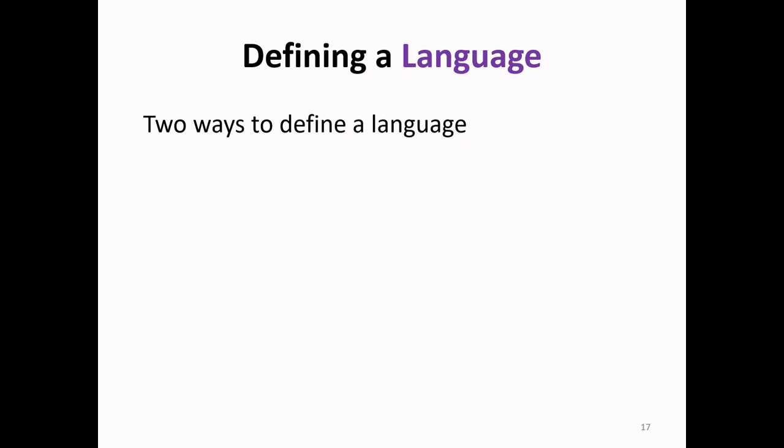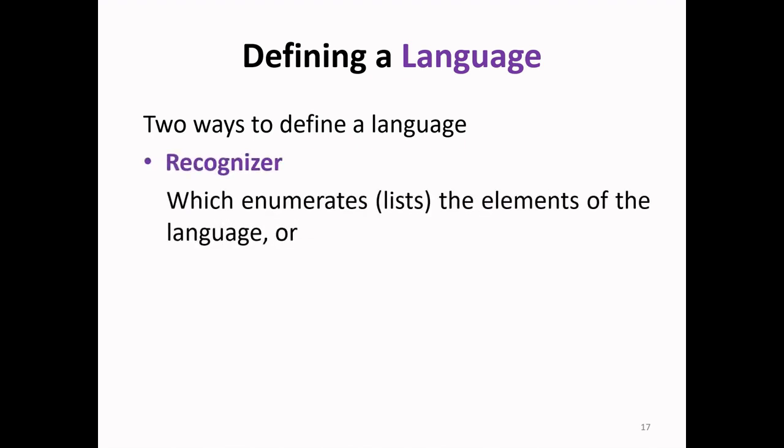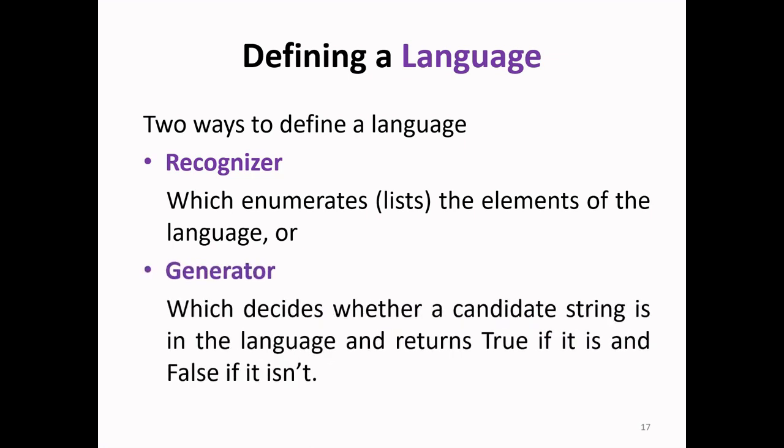There are two ways to define a language. One is the recognizer which enumerates or lists the elements of the language. The other is the generator which decides whether a candidate string is in the language and returns true if it is and false if it isn't.